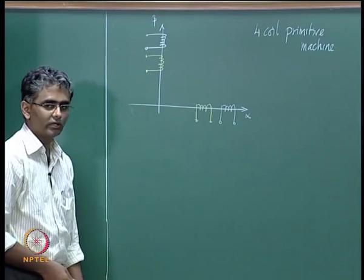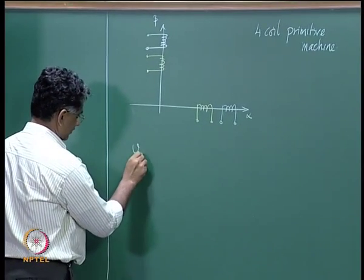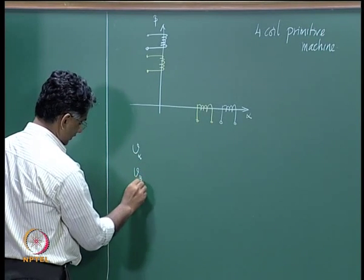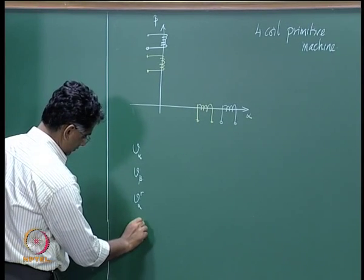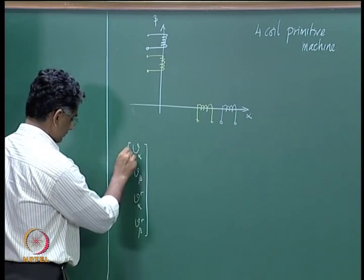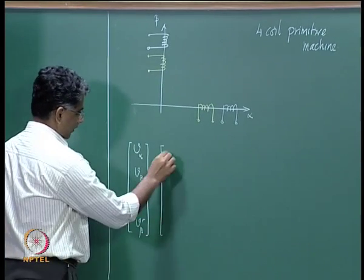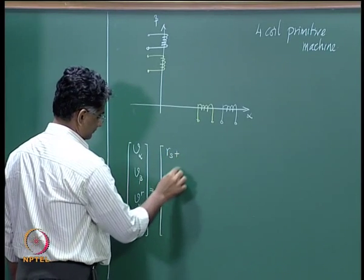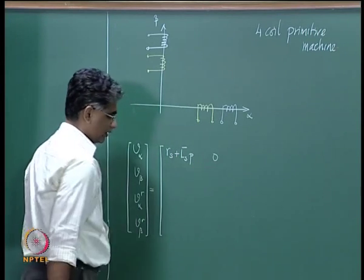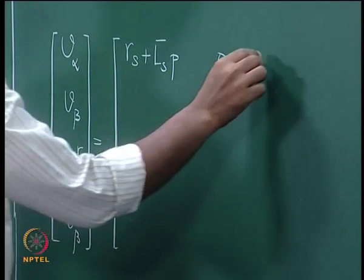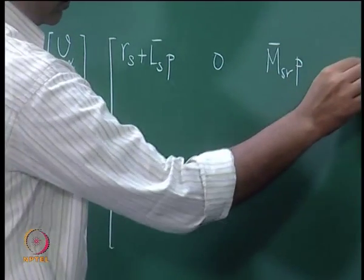For this we wrote down the system description in the operational impedance form. What we have is vα, vβ, vα of the rotor, and vβ of the rotor forming the voltage vector. This is equal to a matrix where the first term is the self-impedance term, and the mutual impedance between the α and β coils of the stator is 0, as is the mutual impedance between the two coils on the α axis.